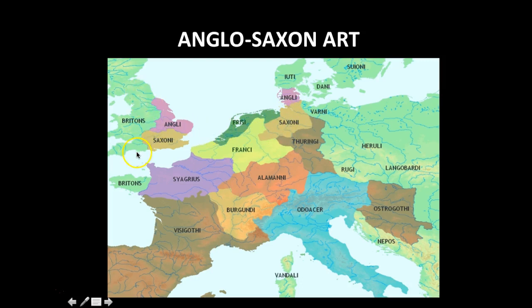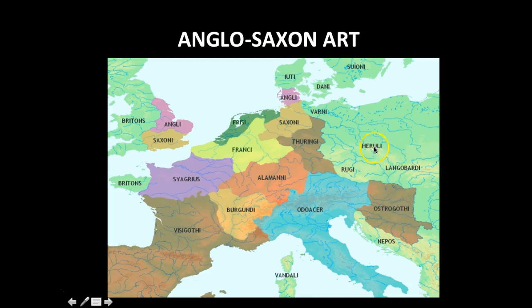Also on the map you can see the Britons, who moved into modern-day Brittany in France. The area known as Francie is going to be occupied by the Franks, and the Visigoths are also going to be in France. You can see the different areas of different tribes, which gives you an idea of how the art moved.